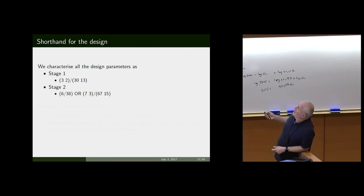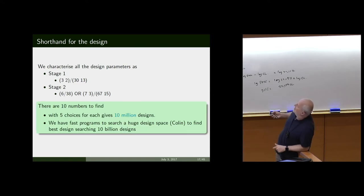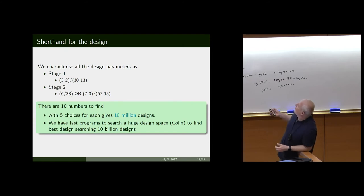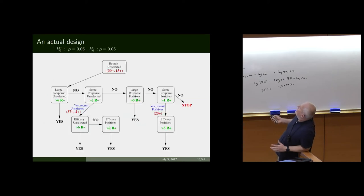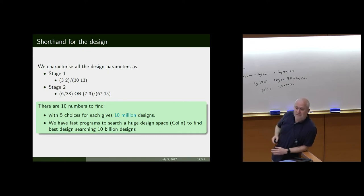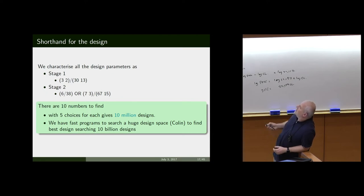This is how we write the design in numbers for the first stage: rejection regions and sample sizes in the unselected or enriched settings. With 10 numbers and five choices each, you've got 10 million designs. We were fortunate to have a dedicated programmer who did a lot of parallelization and GPU programming, searching through 10 billion designs. He also avoided recalculating binomial cumulative probabilities repeatedly by constructing a lookup table, which saved a lot of time. We did find the optimal design for various situations and put this into our paper.